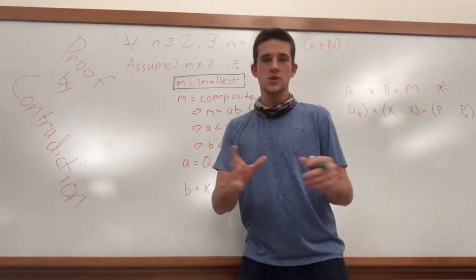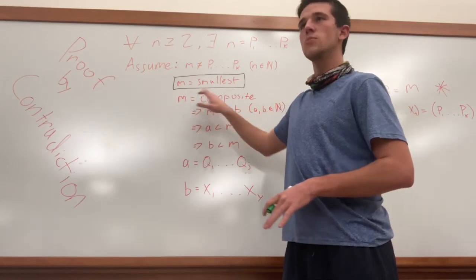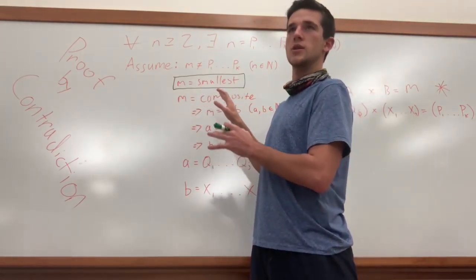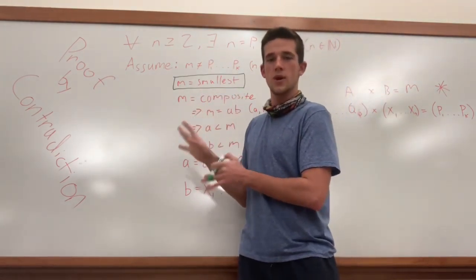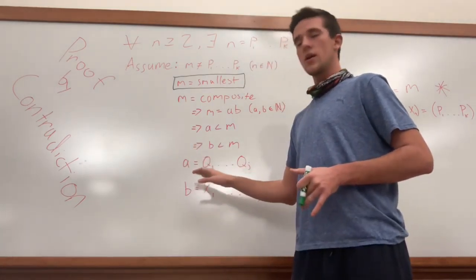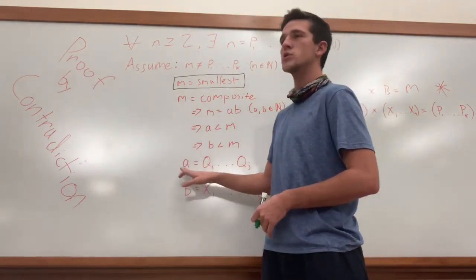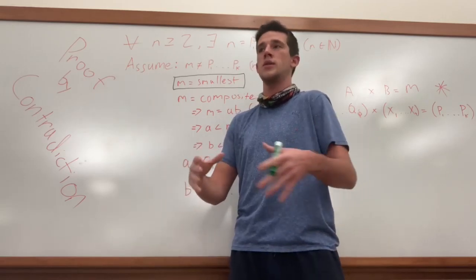Now, this is where things get tricky. If we know that m is the smallest of the group of numbers that cannot be represented by a product of prime numbers, we know that a and b have to be able to be represented by a product of prime numbers because they're both smaller than the smallest number in that group.